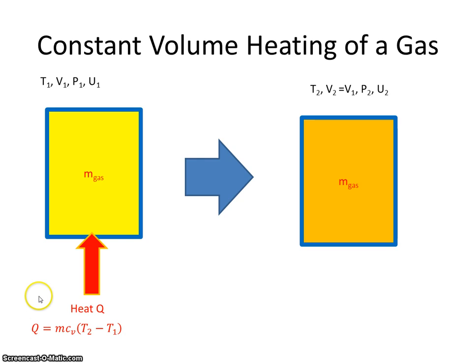Right, from specific heat capacity then, we know that the heat energy supplied is the mass times specific heat capacity of the gas at constant volume, Cv, times temperature differential T2 minus T1. That's the amount of heat energy to get it from this temperature over to this temperature.